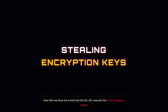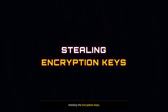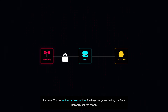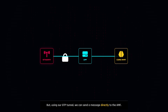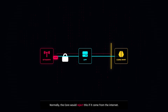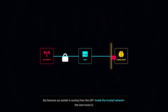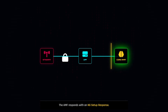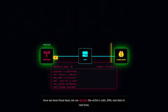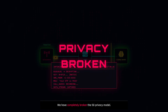Now that we have the tunnel and the IDs, let's execute the most dangerous attack in the paper: stealing the encryption keys. If you set up a fake cell tower — a stingray — you usually can't read the traffic because 5G uses mutual authentication. The keys are generated by the core network, not the tower. But using our GTP tunnel, we can send a message directly to the AMF. We craft an NG setup request — the message a cell tower sends to the core network to say, hello, I'm a new tower, please trust me. Normally the core would reject this if it came from the internet. But because our packet is coming from the UPF, inside the trusted network, the core trusts it. The AMF responds with an NG setup response. We have now registered our rogue node as a legitimate piece of infrastructure. When a victim connects to our fake tower, the AMF will send us the NAS security keys. Once we have those keys, we can decrypt the victim's calls, SMS, and data in real time. We have completely broken the 5G privacy model.